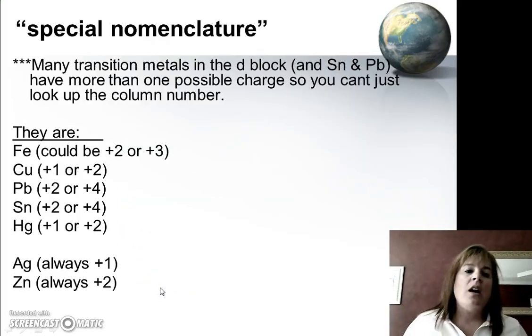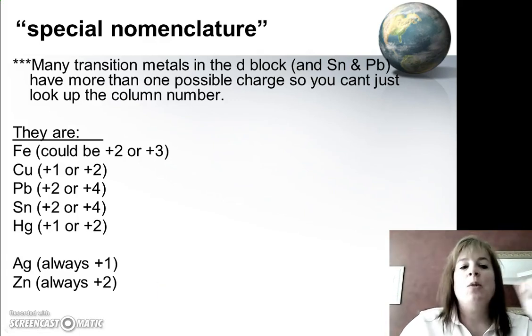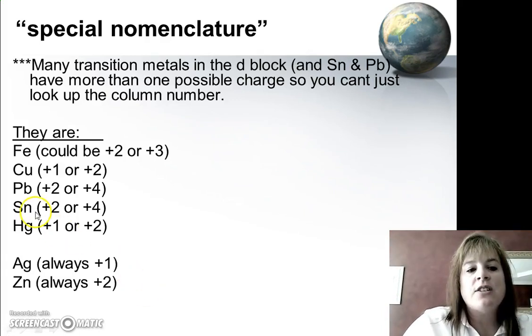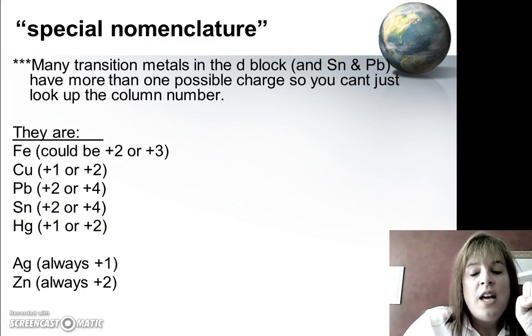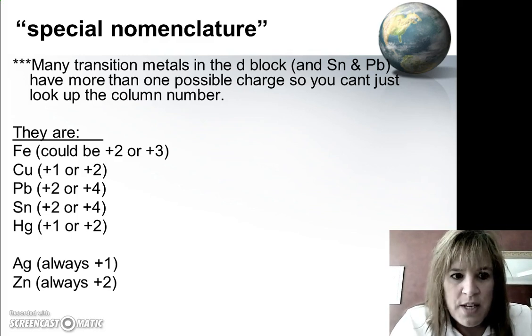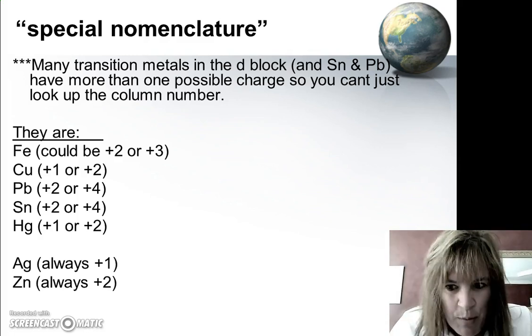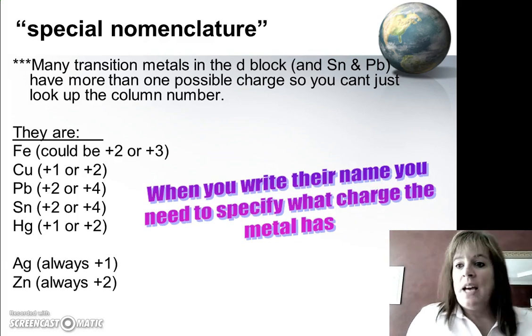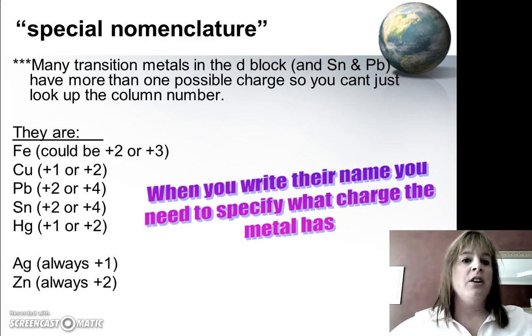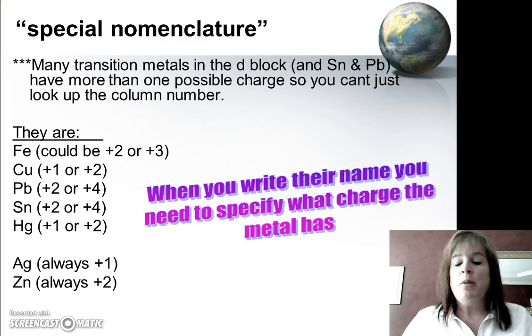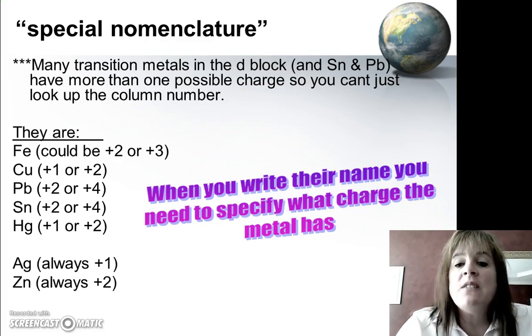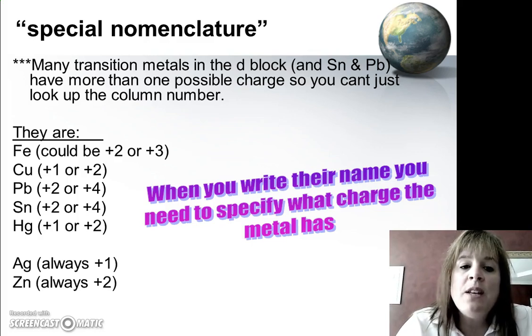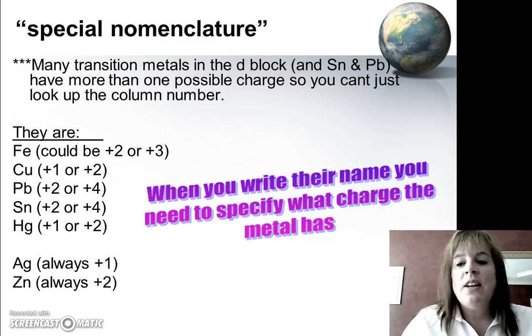So our special ionic nomenclature could have different charges. Now the ones I showed you on the periodic table are the only ones that you'll have to know, not what their charges are per se, but from a name standpoint. Now how do I tell when I say iron chloride? Is it iron plus 2 or is it iron plus 3? Well when we write their name, we need to specify the charge, and we do that by using Roman numerals. So let's take a look.